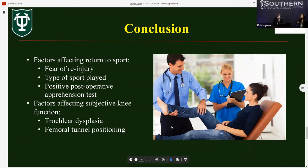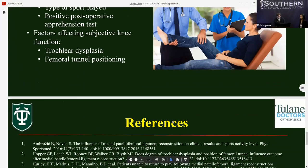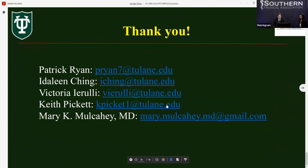To close, our systematic review displayed that an athlete's ability to return to sport and regain knee functionality are affected by an array of factors. Fear of re-injury, participation in pivoting sports, and a positive postoperative apprehension test were all associated with decreased ability to return to sport following MPFL reconstruction with or without TTO. High degrees of trochlear dysplasia and increased distance of femoral tunneling from anatomic position were associated with decreased subjective knee scores. This information can be used to build future studies so that surgeons can better advise their patients on expectations following surgery. Thank you for listening.